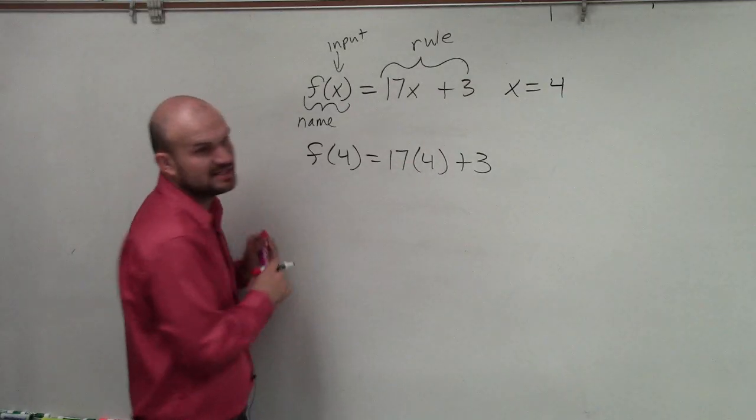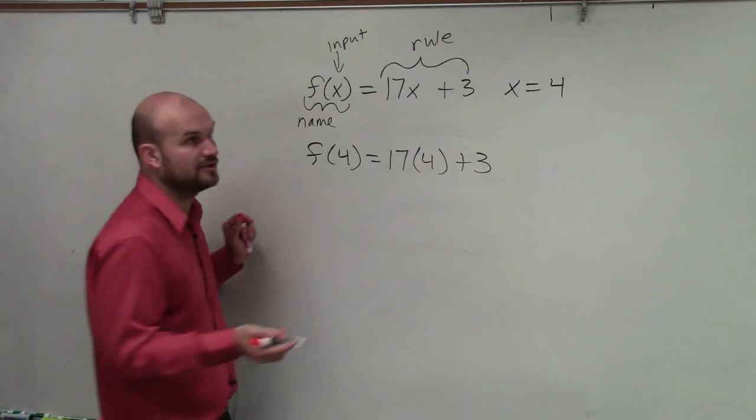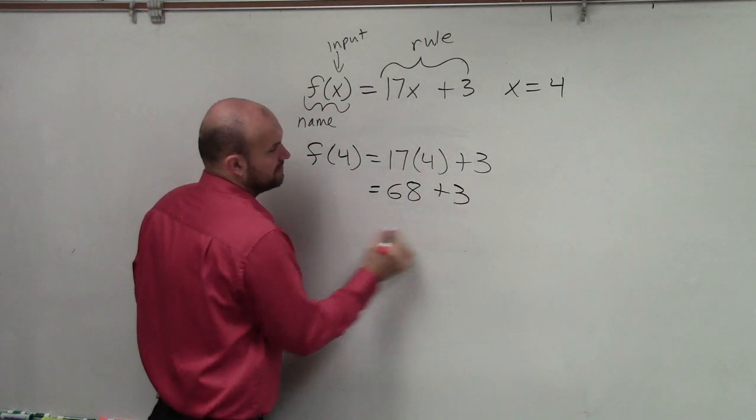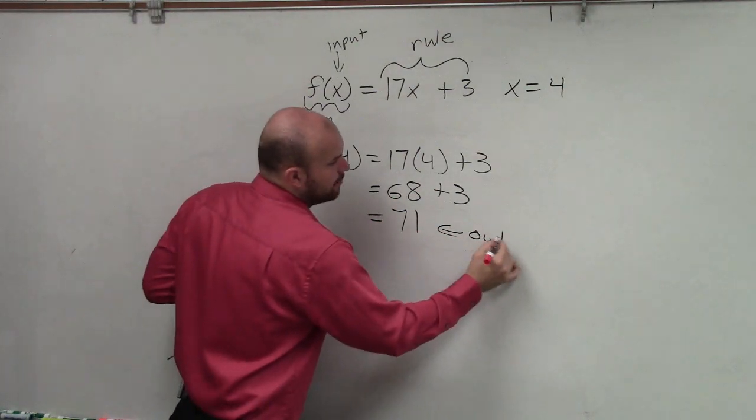So I do 17 times 4. 17 times 2 is 34. So times 4 is going to be 34 would be 68 plus 3. 68 plus 3 is going to be 71. That is my output.